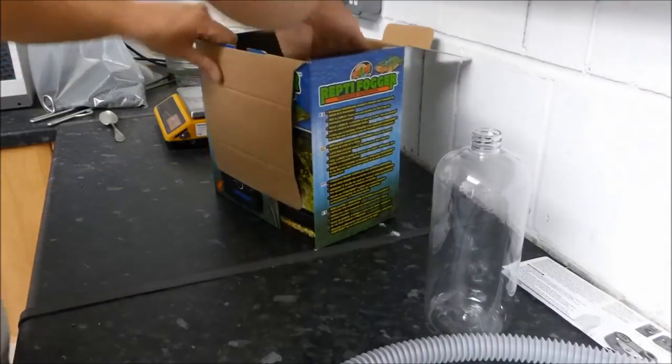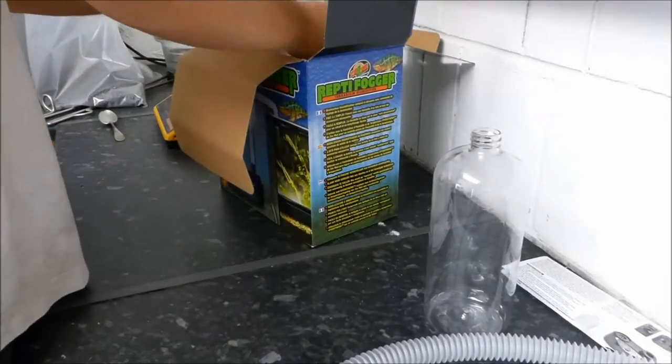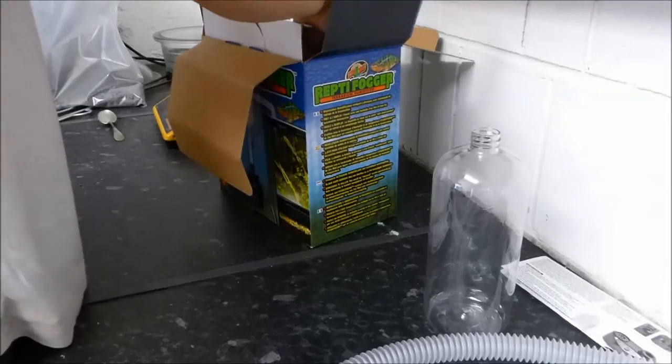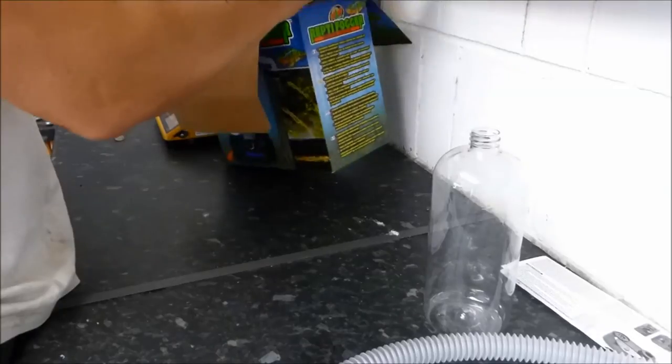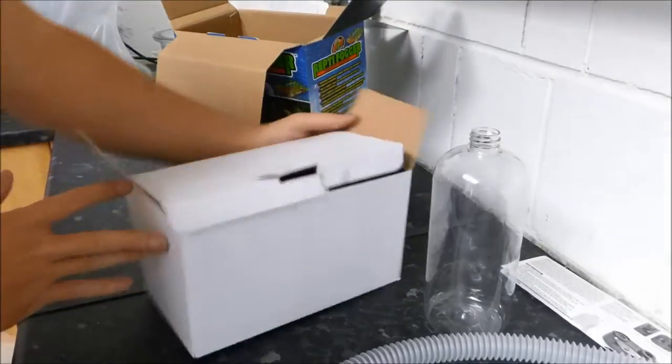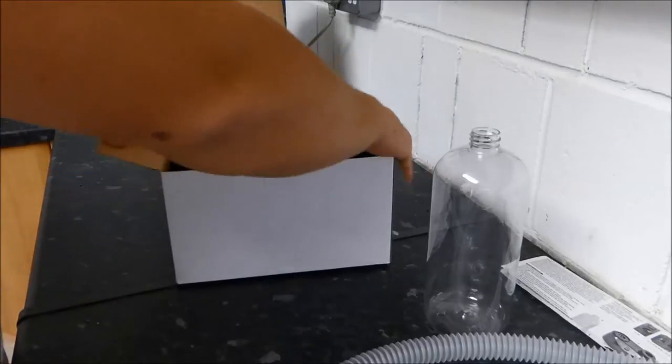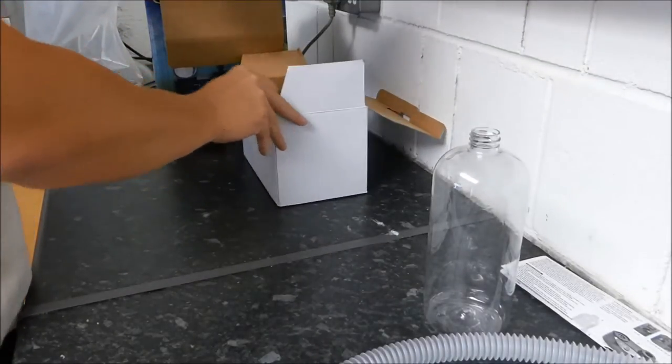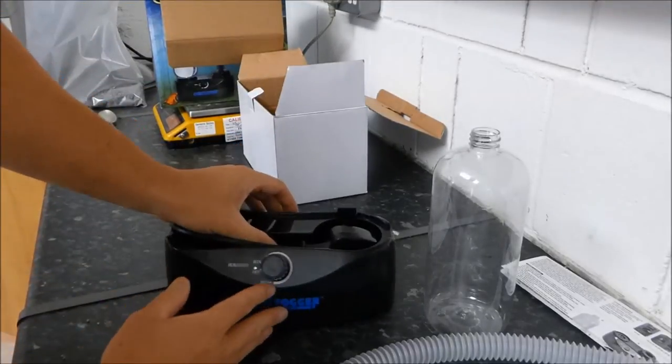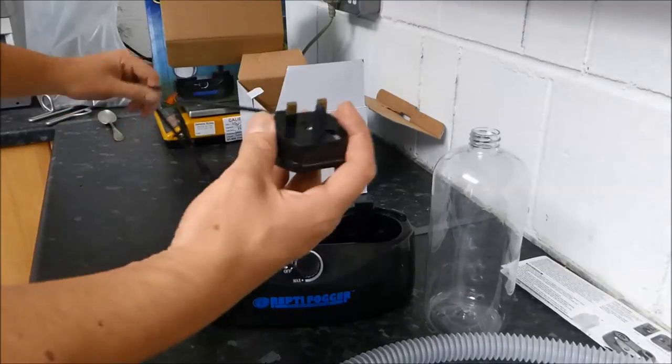In the box is another box which contains the base unit, which is the main component of the machine. So there is the Reptifogger base, 240V.